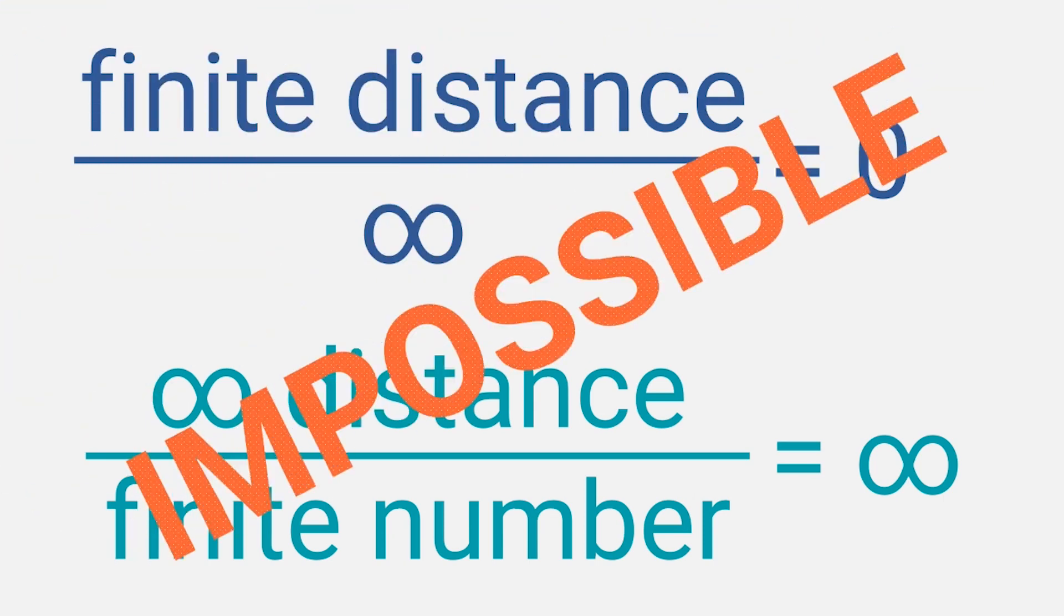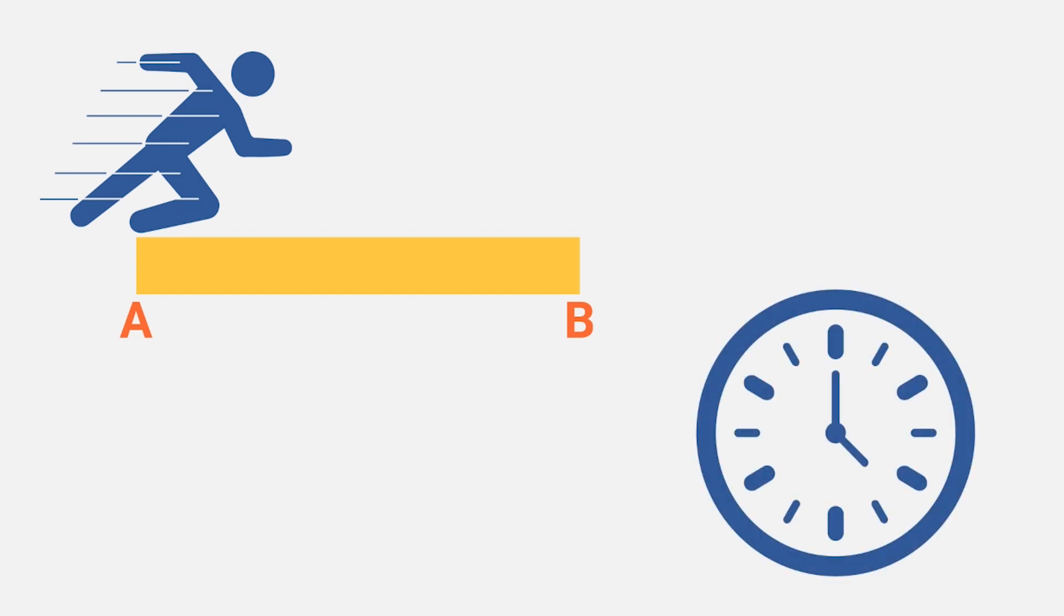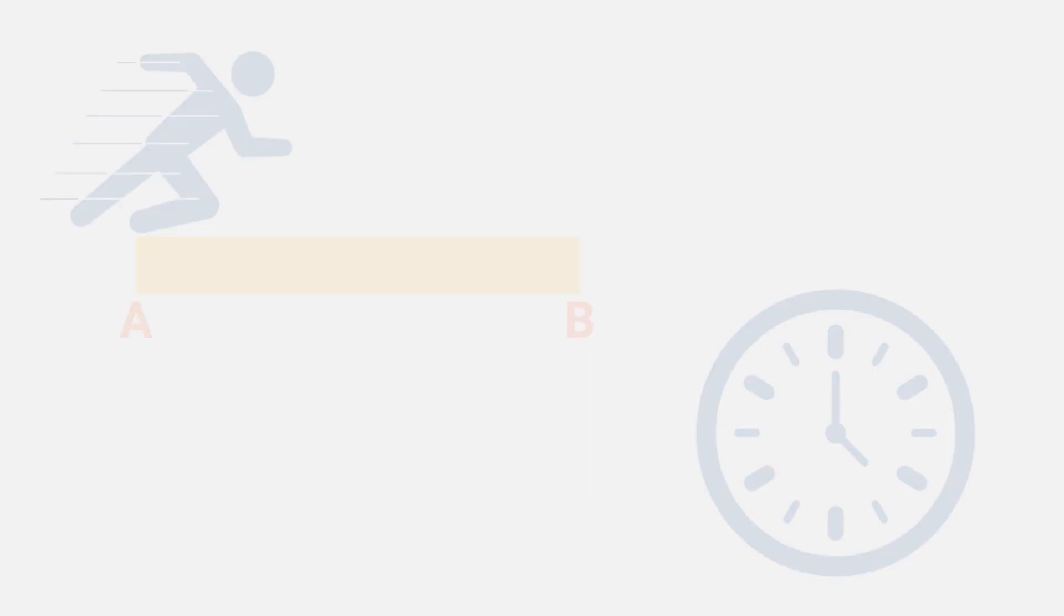But our problems don't stop there. Because not only is distance infinitely divisible, and thus impossible to cross, time is also infinitely divisible, and impossible to cross. To prove that point, he goes back to running again.